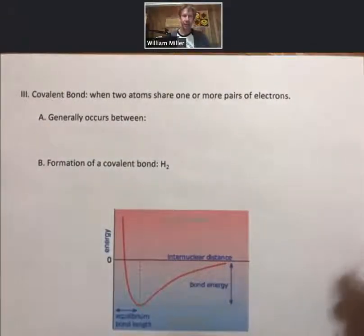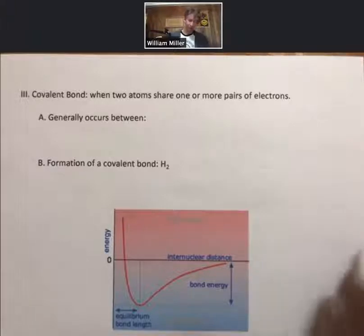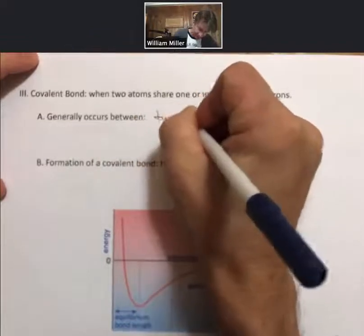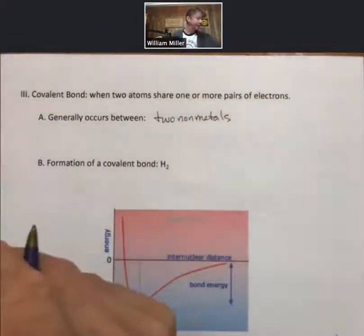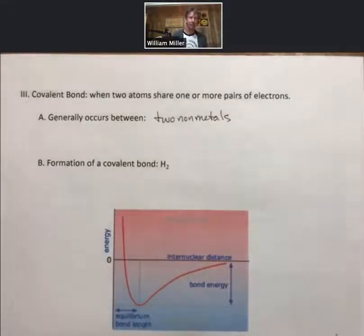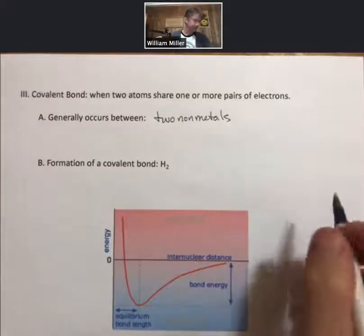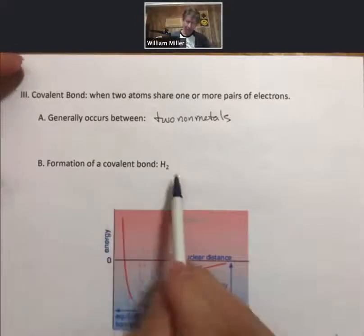Now we're going to start a long section on covalent bonds. Covalent bonds are when two atoms share one or more pairs of electrons. Covalent bonds generally occur between two nonmetals. Now let's think about the formation of a covalent bond, and we're going to think about it for hydrogen.